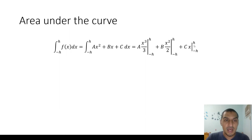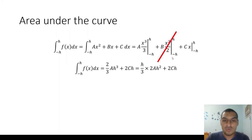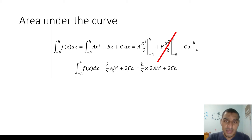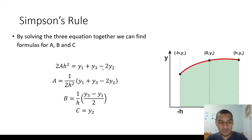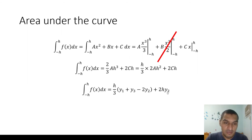By substitution, the bx²/2 term goes to zero because h² minus h² cancels out. What we end up with is (2/3)ah³ — since it becomes 2h³/3 multiplied by a — plus 2h multiplied by c. We can rewrite this as h/3 multiplied by 2ah², and since we know 2ah², we substitute y1 + y3 - 2y2 for that term, and c equals y2.